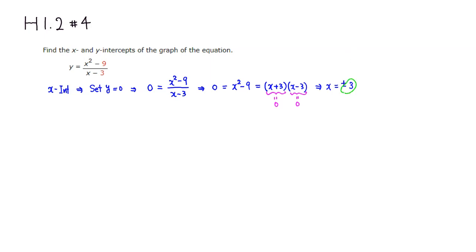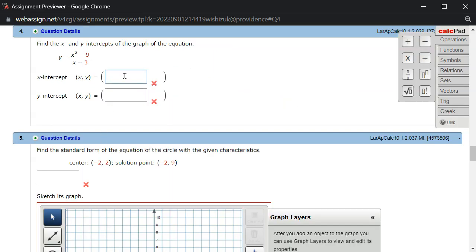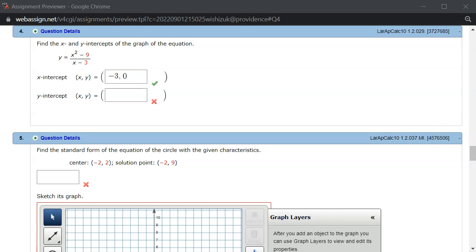So x is going to be negative 3. So let's put it in. Negative 3. And then, since it's an x-intercept, the y-coordinate is always 0. So let's check the answer.